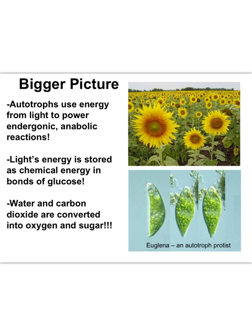What's pretty magical about photosynthesis, besides the fact that the sun's energy is actually stored as chemical energy, is that photosynthesis makes sugar from water and carbon dioxide. And in this process, plants also make oxygen, which is arguably just as important to life on Earth as glucose.